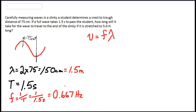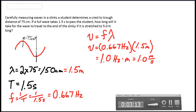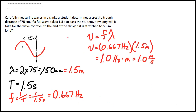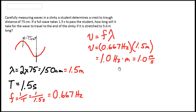Now we know both the wavelength and the frequency, so let's calculate the velocity. We get velocity equals 0.667 hertz times 1.5 meters, which equals 1.0 hertz·meters. Since 1 hertz is 1 over seconds, the equivalent units give us a velocity of 1.0 meters per second.